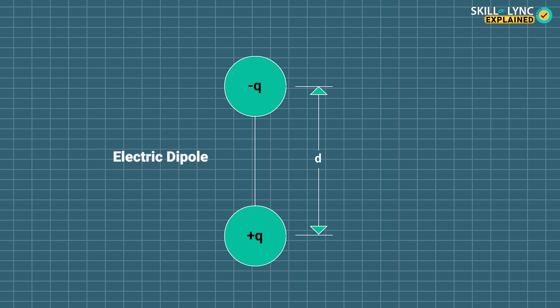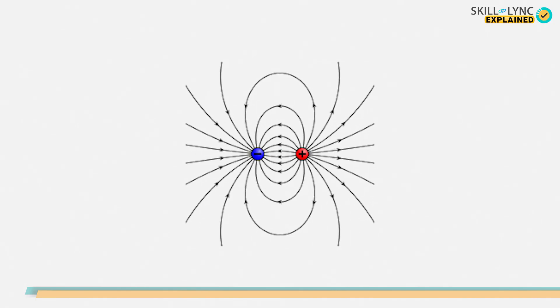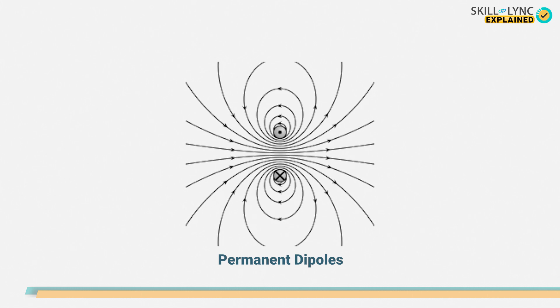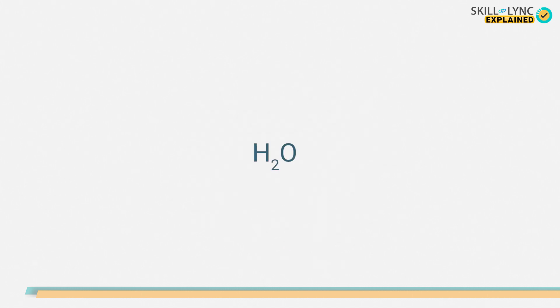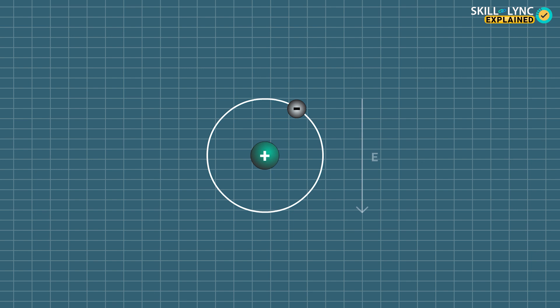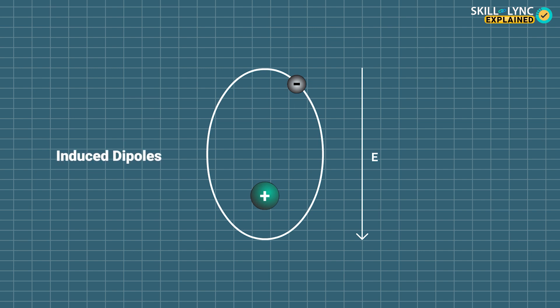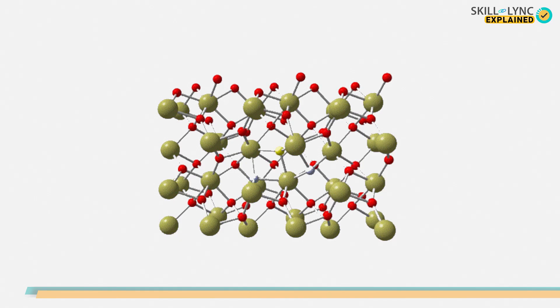The materials which exhibit this naturally are said to be permanent electric dipoles. Water, carbon dioxide, and ammonia are few examples for permanent electric dipoles. On the other hand, few materials exhibit electric dipoles when an electric field is applied to it. Those materials are said to be induced dipoles.